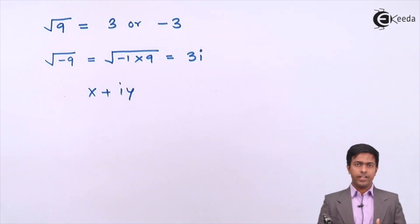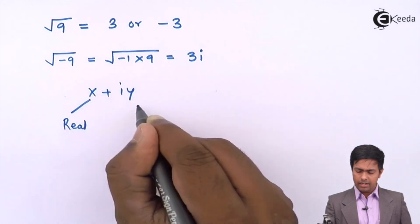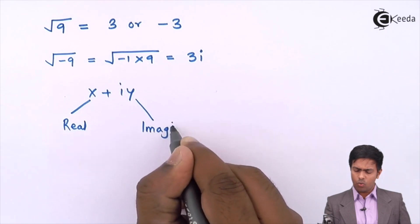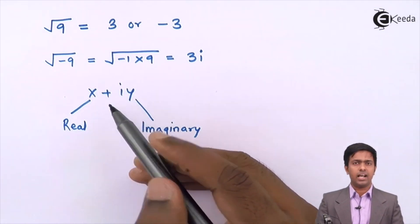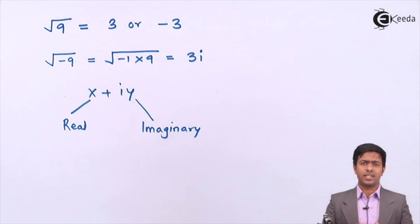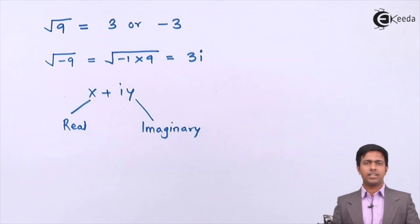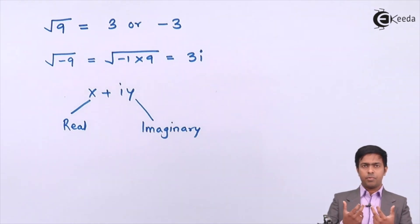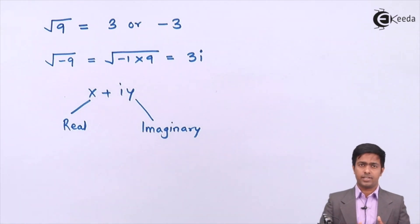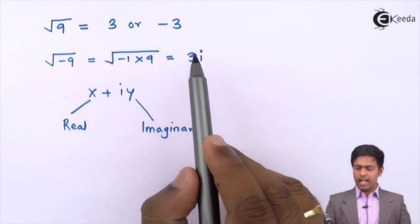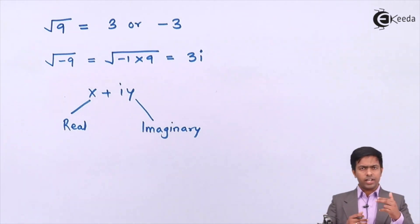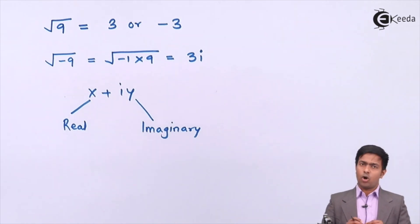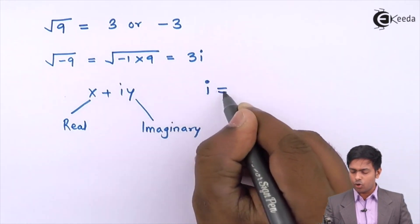Here x is called the real part and iy is called the imaginary part. It is called the imaginary part because it is preceded by the symbol i. A complex number is simply a combination of a real and an imaginary part. The value of i in a complex number is the square root of minus 1.